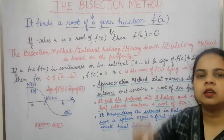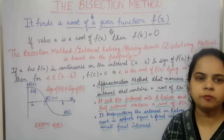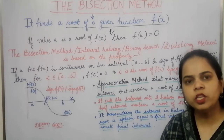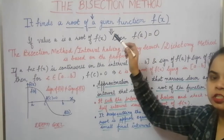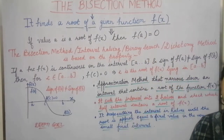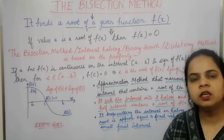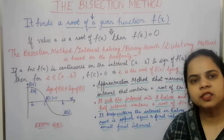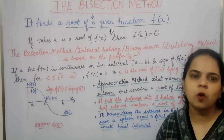The bisection method is a method to find a root of an equation in which an interval is defined. The root we are calculating is defined in a particular interval given initially. It finds a root of a given function f(x), where the solution is a particular value of x which, when substituted into the function, results in f(x) equal to 0. That value of x for which f(x) equals 0 is called the root of the function.